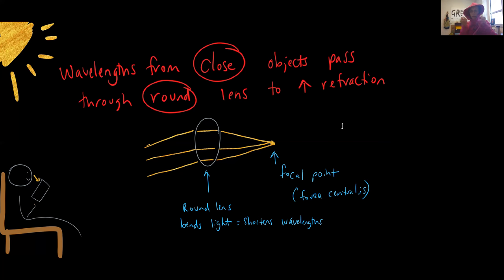And you can shorten them up by sending them through a big round lens. And we can make our lens big and round by tightening up that ciliary muscle, relaxing the suspensory ligaments or the ciliary zonule, and then making that lens big and round. It's going to shorten up those wavelengths of light because they're bending through that big round lens.